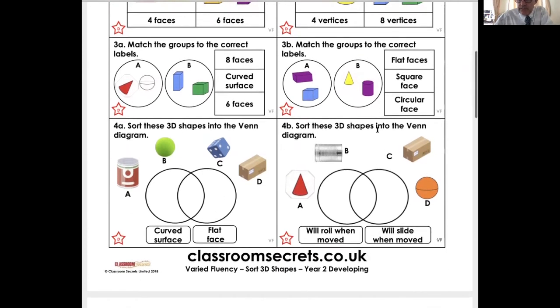Sort these 3D shapes into the Venn diagram. Will roll when moved. Will roll when moved. Will slide when moved. Oh, the ball will roll. D will go here. The cylinder will roll when moved and the coin will slide when moved. Well, that will do. C will go in there.